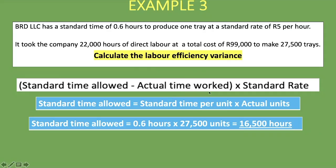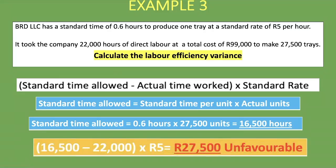The actual time worked is 22,000 hours. The standard rate is 5 rand per hour. So: (16,500 hours − 22,000 hours) × 5 rand = −27,500 rand. The answer is negative, confirming the variance is unfavorable. Our actual time worked (22,000 hours) far exceeded our standard time allowed (16,500 hours), meaning we spent significantly more time and money than expected.